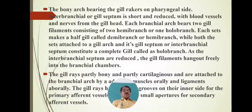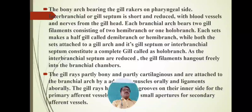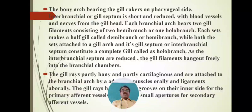The holobranch consists of half gill filaments from one side and half from the other side. When these two halves are attached to each other by gill rakers and gill arch, they form a complete gill. That complete set of gill is called a holobranch. As the interbranial septum is reduced, the gill filaments hang out freely into the branchial chambers.